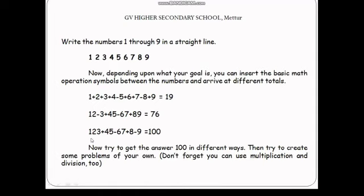So that is 123 + 45 - 67 + 8 - 9, the answer is 100. In this combination, the order of math is 100. You can build expressions. You have a puzzle, you have a challenge — you have to get that number 100. How many ways can you make 100? You have to find the number of combinations. We will build expressions using basic mathematical operators: addition, subtraction, multiplication, and division.